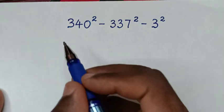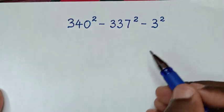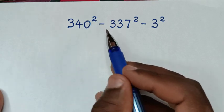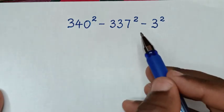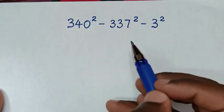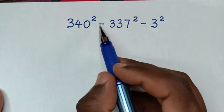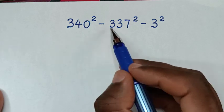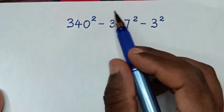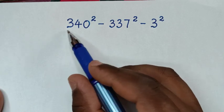Hello, you are welcome to solve this math problem which is 340² minus 337² minus 3². From this part, 340² minus 337², this part is in the form of a difference of squares. So we will apply the difference of squares rule.